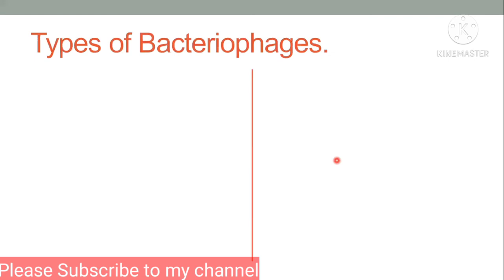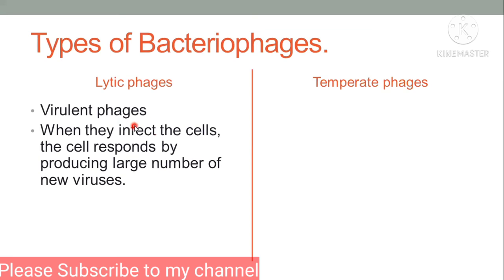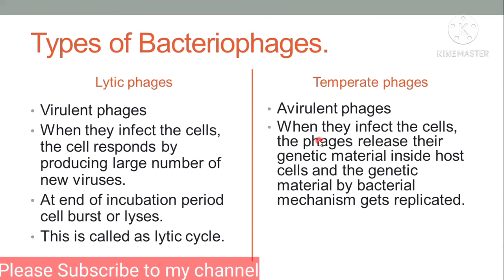Bacteriophages are of two types: lytic bacteriophages and temperate bacteriophages. Lytic bacteriophages are also called virulent bacteriophages. They infect bacteria and replicate inside the bacterial cell, forming progeny bacteriophages. When the bacterial cell gets saturated, it lyses — the cell breaks down — and the replicated bacteriophages are released and go on to infect new bacterial host cells. This whole process is called the lytic cycle.